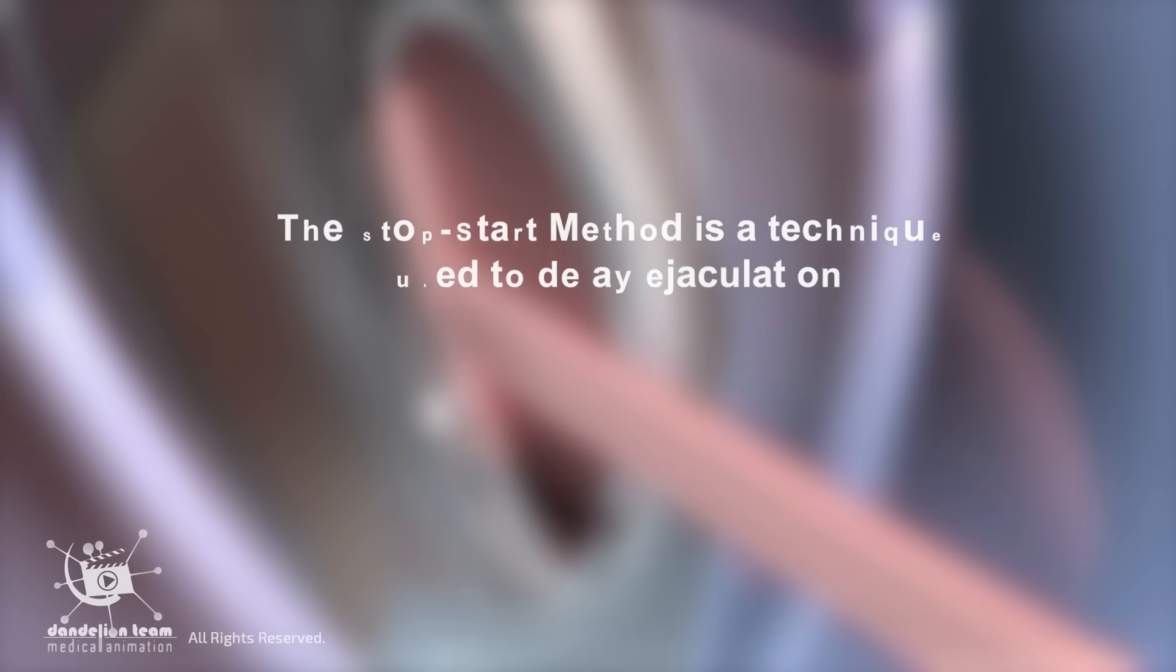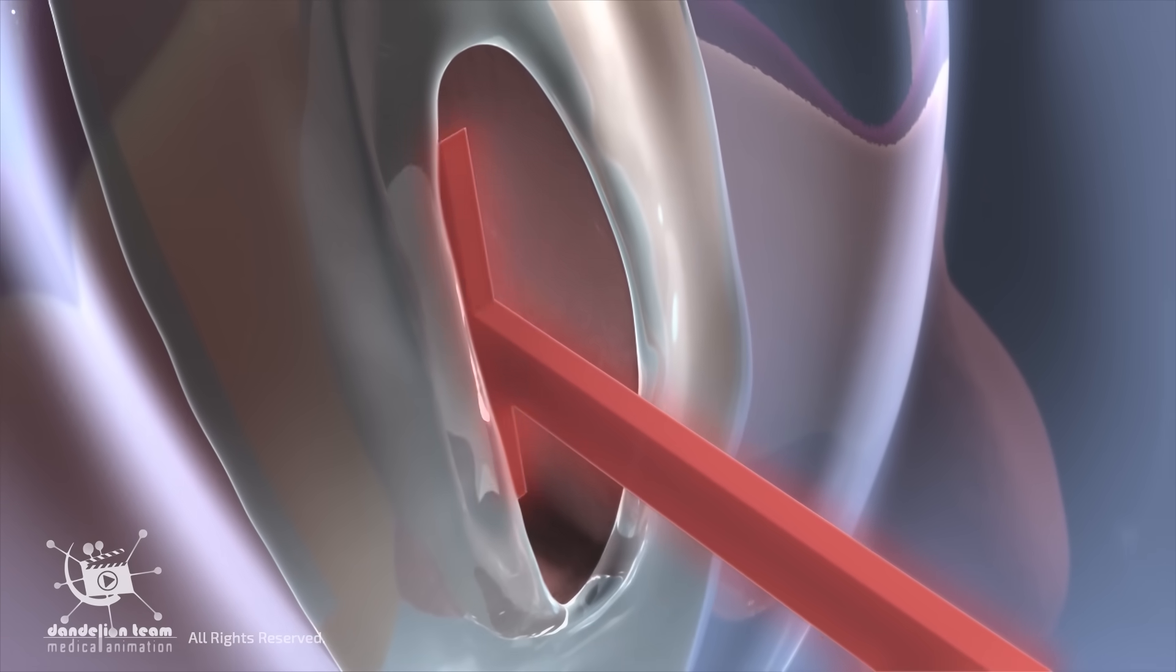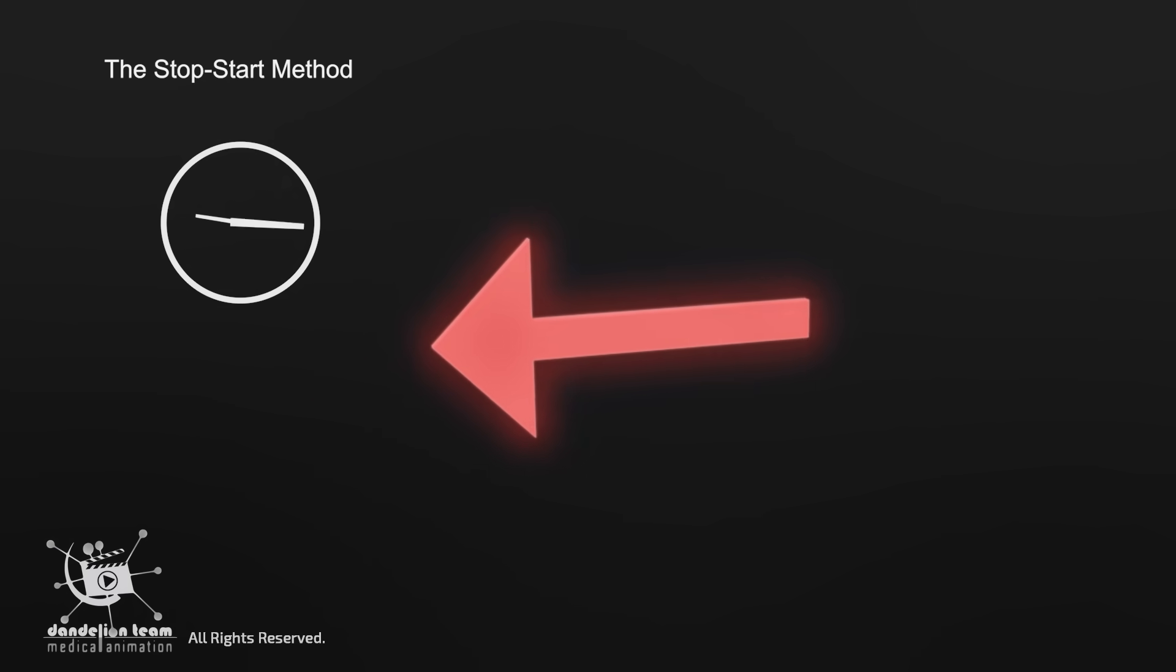The start-stop method is a technique used to delay ejaculation. It involves stimulating the penis until the feeling of ejaculation arises, then stopping the stimulation and waiting until this feeling fades away. This is repeated several times until ejaculation occurs.